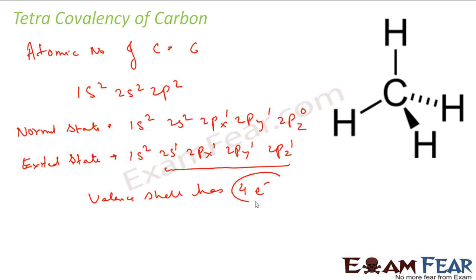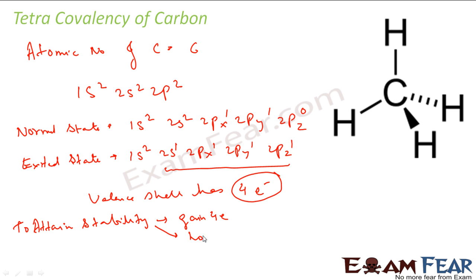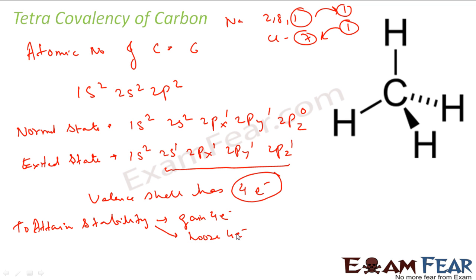Now since the valence shell has 4 electrons and the noble gas configuration should have 8 electrons, to attain stability it can either gain 4 electrons or lose 4 electrons. But it requires huge energy to either gain or lose 4 electrons. For example, sodium has 1 extra electron and can easily give it; chlorine needs 1 electron and can easily take it. But exchange of 4 electrons is not a joke — it requires huge, huge energy. So gaining or losing 4 electrons is not possible.